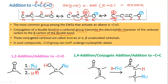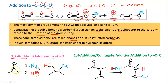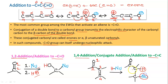Because the positive charge is present at carbon 2 and carbon 4, the nucleophile can attack at carbon 2 or at carbon 4. Conjugation of the double bond to a carbonyl group transmits the electrophilic character of the carbonyl carbon to carbon 4, which is the beta carbon of the double bond. This conjugated carbonyl system is known as an enone or alpha-beta unsaturated carbonyl. Depending on where the nucleophile attacks, two types of addition are possible.